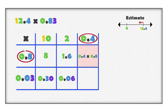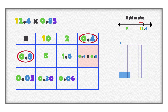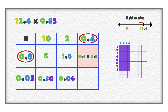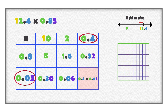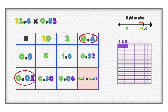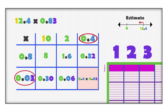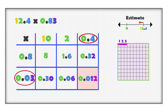Multiply four tenths with eight tenths. When multiplying a part of a whole with another part of a whole, we get smaller pieces. Start with four tenths; divide the four tenths into ten equal parts. Eight tenths of four tenths is eight out of ten of each of the four tenths. This is thirty-two parts out of one hundred total parts, or thirty-two hundredths. Remember, when we multiply tenths with tenths, we get hundredths. Now multiply four tenths with three hundredths. Divide the three hundredths into ten equal parts. Four tenths of three hundredths is four out of ten of each of the three hundredths. This is twelve parts out of one thousand total parts, or twelve thousandths. Remember, when we multiply tenths with hundredths, we get thousandths.